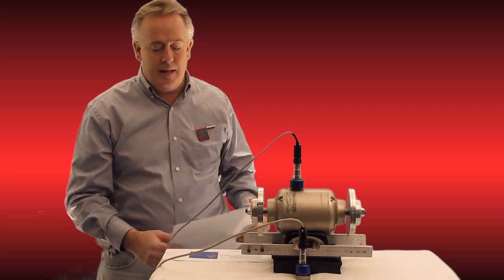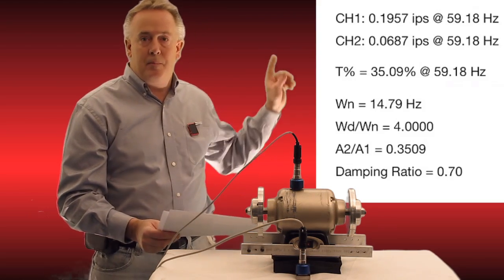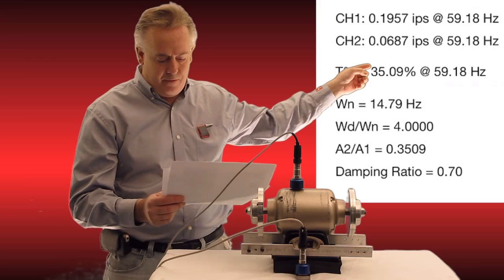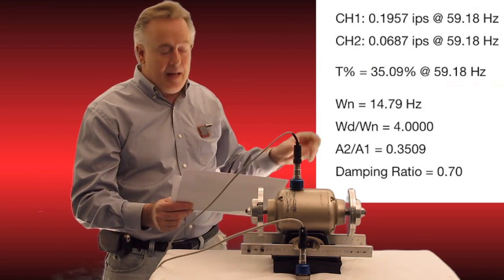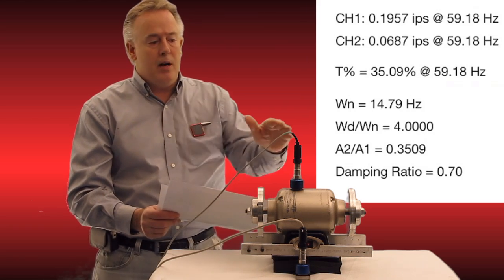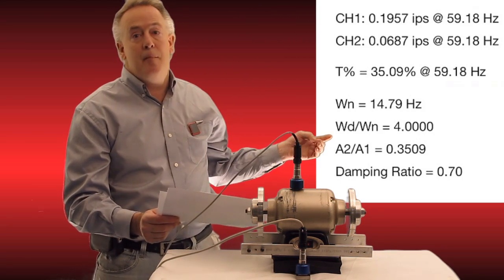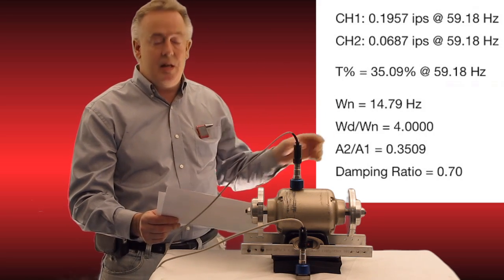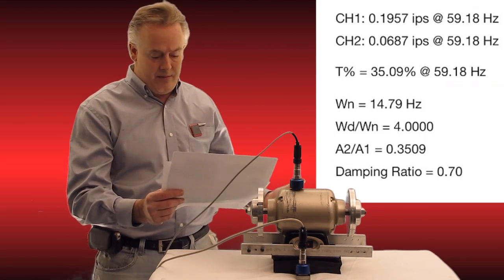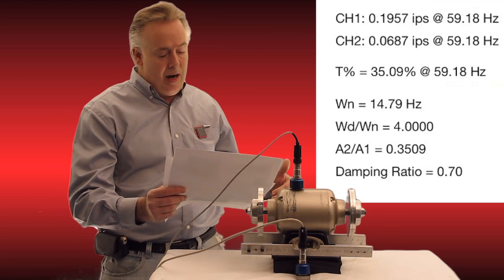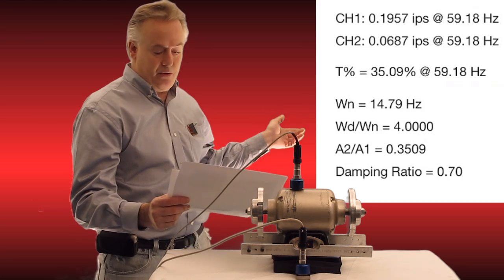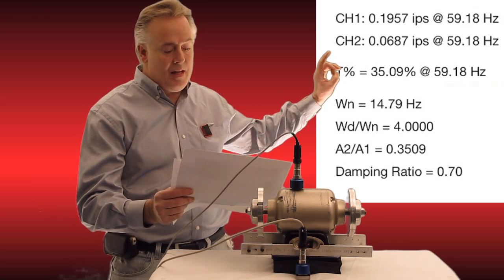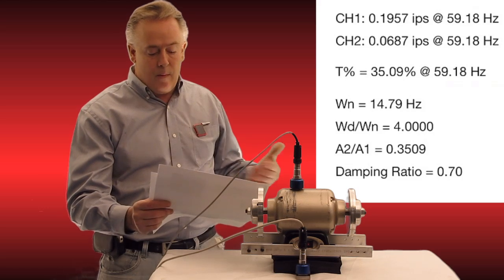Let me put up the transmissibility report one more time to explain what this is about. You'll see channel one and channel two — I'm looking at both amplitudes and the frequency. My frequency is at 59.18 Hz, and below that is the percentage of vibration between channel one and channel two, which in this case is 35.09%. The next value is from our tap test — that was the natural frequency of this particular motor at 14.79 Hz. Below that is the ratio between the driving frequency and the natural frequency, which is 4.0.